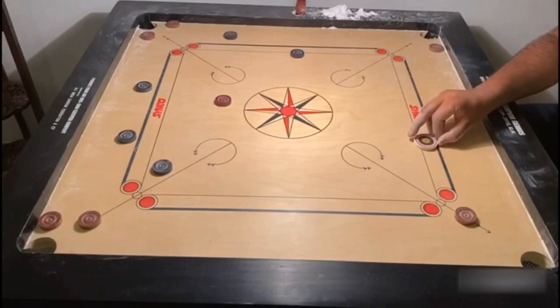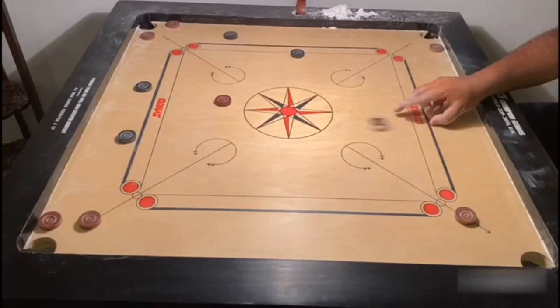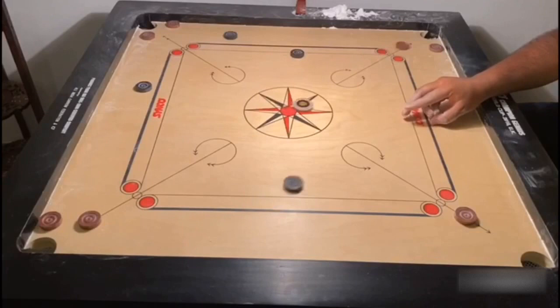First comes a punch or slip. Second, an effortless double. Third, he brushes the black coin and hooks the queen. Observe in slow motion the power that he has generated to successfully pocket the queen and bring the black coin back in his half of the carrom board.